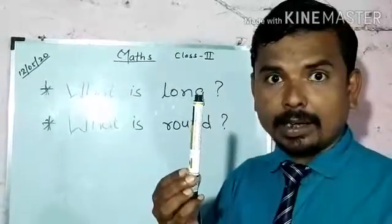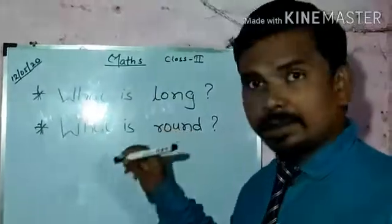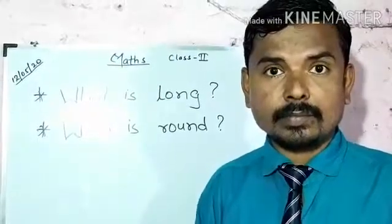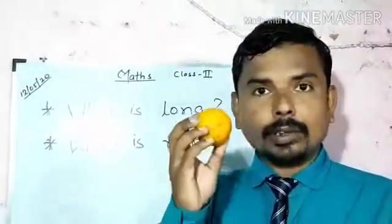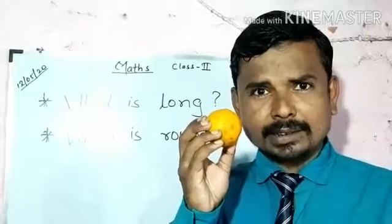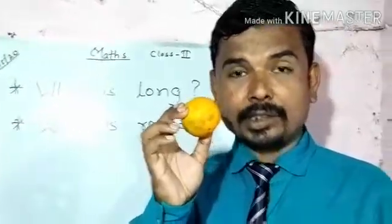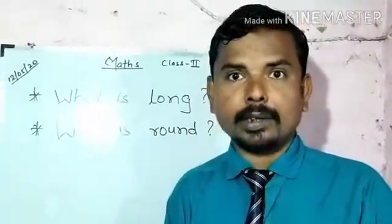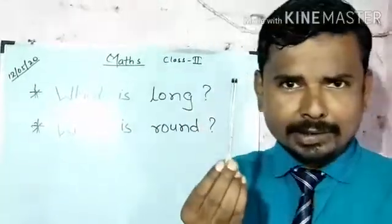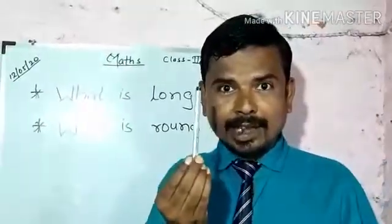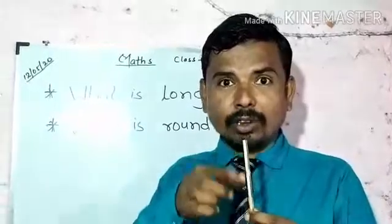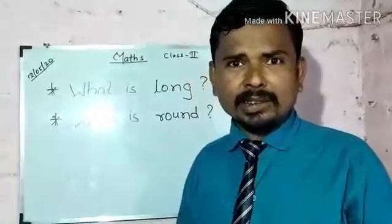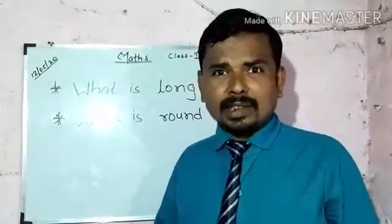A marker — I write with it. This is also long. Now guess what is this? Yes, right — this is an orange. This is also round.